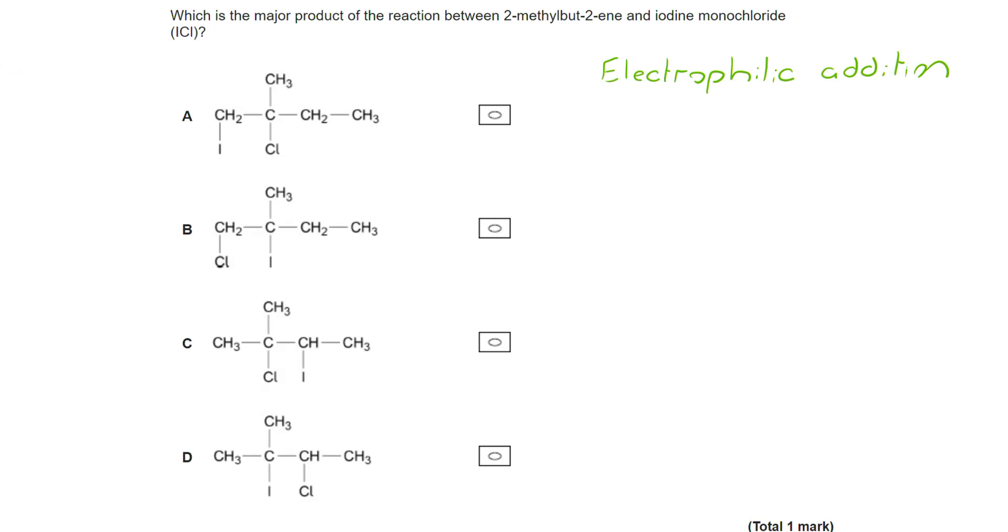First of all, this is an electrophilic addition reaction mechanism. We know that because we're starting with a double bond and we end up without a double bond. So we've broken the double bond and we've added things to either side of it. We also know that the double bond is susceptible to attack from electrophiles because it is electron rich.